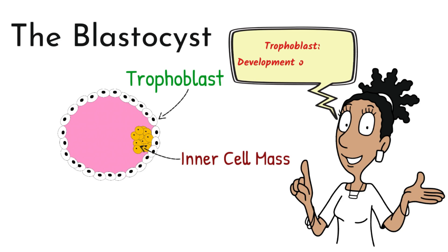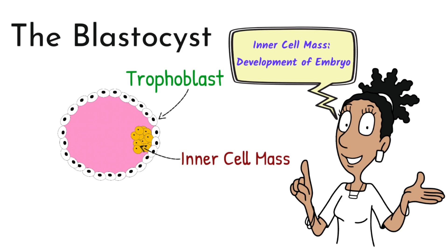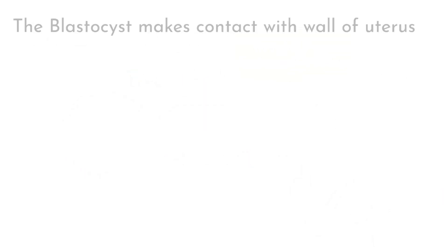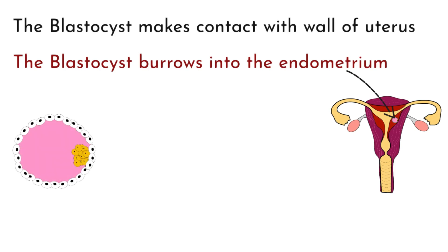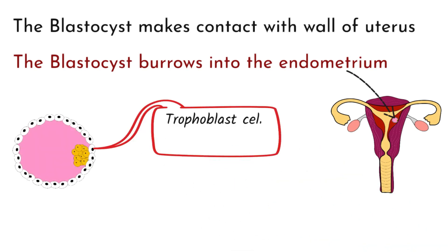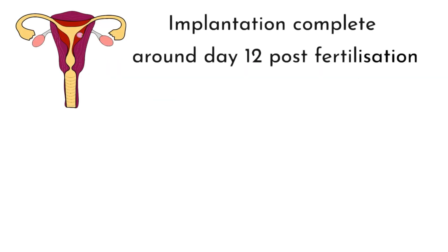The trophoblast is involved in the development of the placenta, and the inner cell mass is associated with the development of the embryo. The blastocyst makes contact with the wall of the uterus and burrows into the endometrium, the lining of the uterus. This happens because trophoblast cells secrete digestive enzymes that break down the endometrium. Implantation is complete around day 12 post-fertilisation, and once implantation has occurred the woman is said to be pregnant.